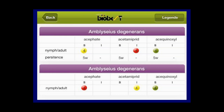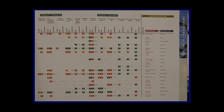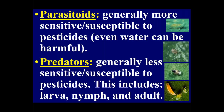Looking at Amblyseius degenerans with pesticides like acephate (Orthene), acetamiprid (TriStar), and Ace — both nymph and adult stages scored four, meaning over 75% mortality, with persistence of about five weeks each. The catalog shows many fours, but also many vacant entries with no information. We are working to redesign this guide to make it more valuable for greenhouse producers.